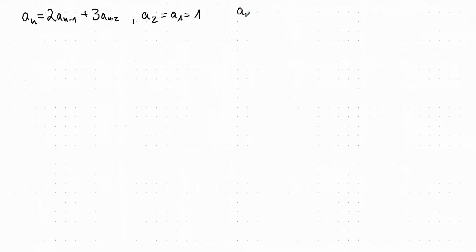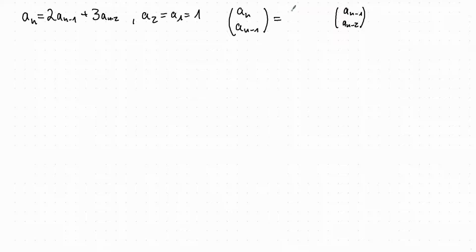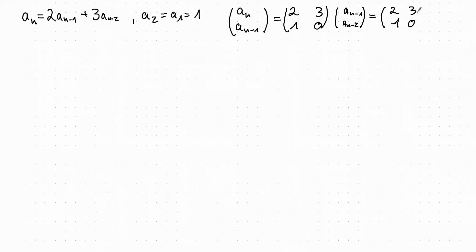We can write (a_n, a_{n-1}) as a vector and we want to find a matrix that acts on it. Since a_n equals 2·a_{n-1} plus 3·a_{n-2}, we have 2 and 3 in the first row, and 1 and 0 in the second row. Continuing and decreasing the index, we get the matrix [[2,3],[1,0]] to the power n-2 times the starting vector (1,1). If we can diagonalize this matrix, we can easily compute its power.